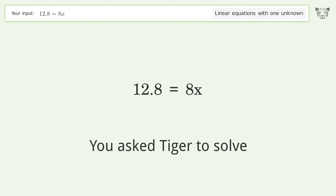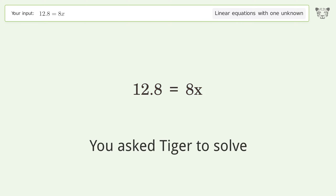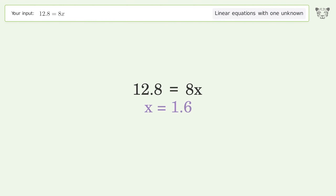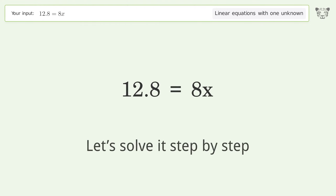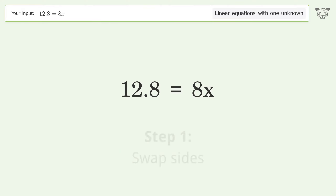You asked Tiger to solve this — it deals with linear equations with one unknown. The final result is x equals 1.6. Let's solve it step by step: swap sides.